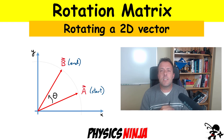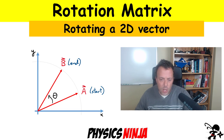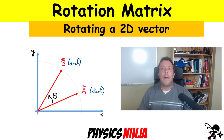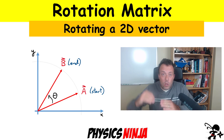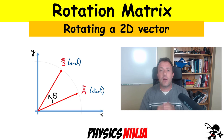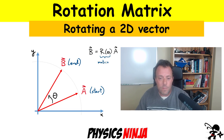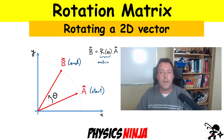Hi everybody! PhysicsNinja here. Today I want to look at rotation matrices in two dimensions. I'm going to start with a vector A and rotate it through some angle theta to get a final vector B. I want to describe this in terms of a rotation matrix — how do I go from vector A to vector B?